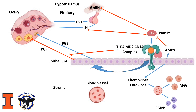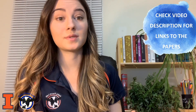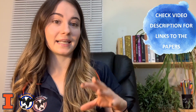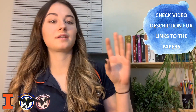Some cows with endometritis can still ovulate and form a corpus luteum. However, the peripheral plasma concentrations of progesterone are going to be lower than in normal fertile animals, and the luteal phases are going to be extended. So we saw that the endometrial cells have a key role in the innate immune response, and this leads to a modulation in the endocrine function, linking immunity with infertility.